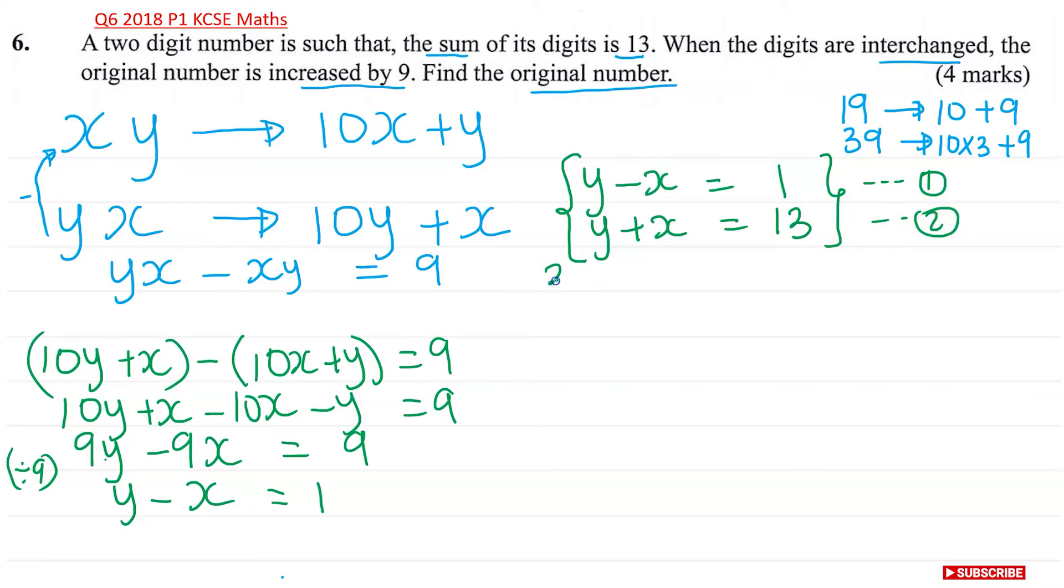I'm going to do equation 2 take away equation 1. So if I do Y take away Y, that will be 0. X take away negative X. So that will now become 2X. So X take away negative X. It becomes X plus X. It's going to be 2X equals to 13, take away 1, 12. This means X is equal to 12 divided by 2, which is 6.